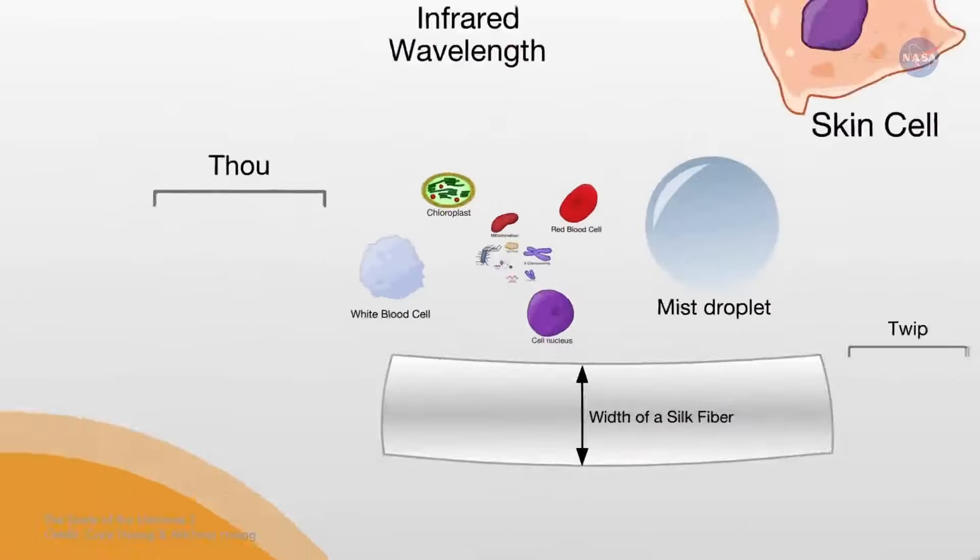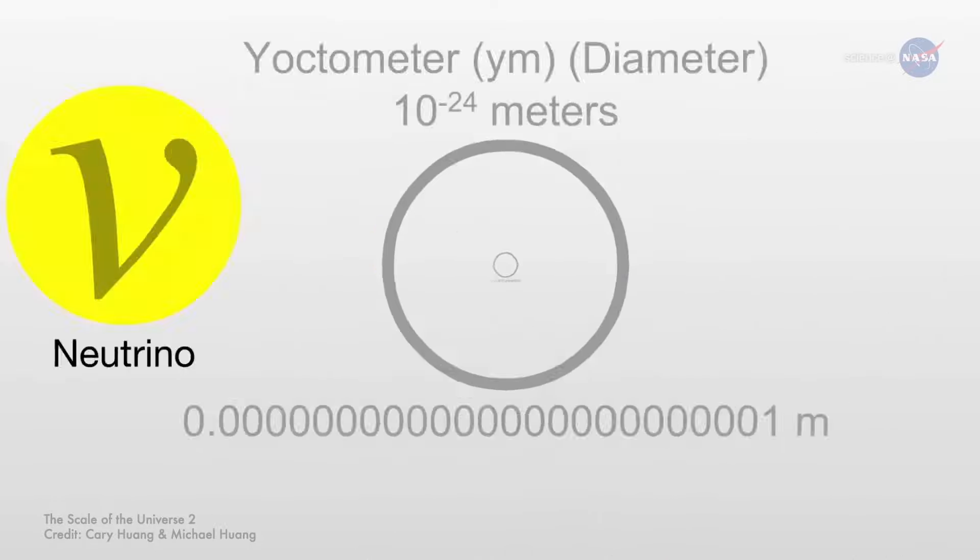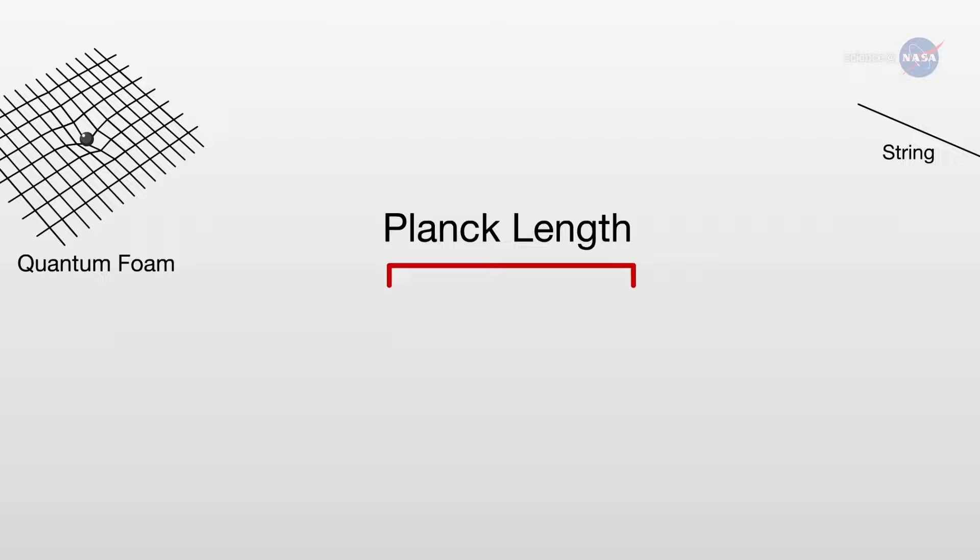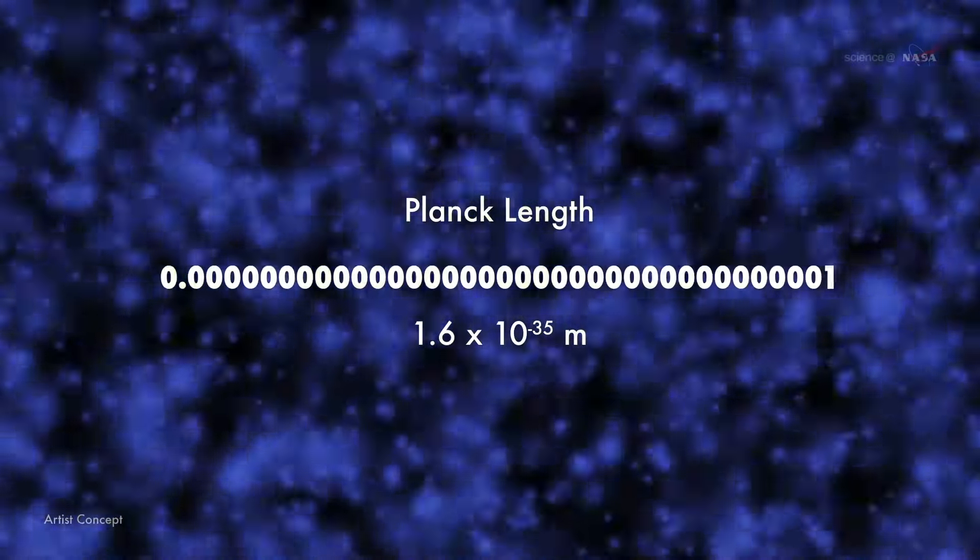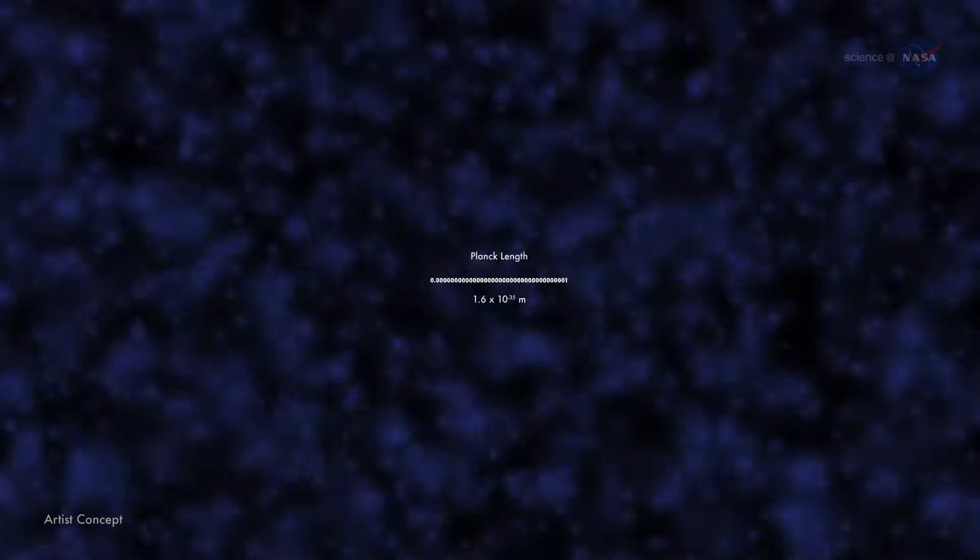Superstrings, singularities, and even cosmic particles can all be as small as the Planck length, 1.6 times 10 to the power of negative 35 meters, an incredibly small number. The Planck length is much smaller than the measuring capability of any current machine.